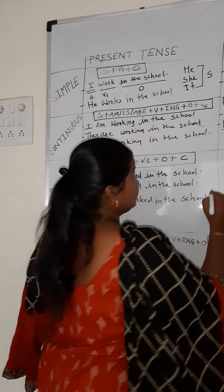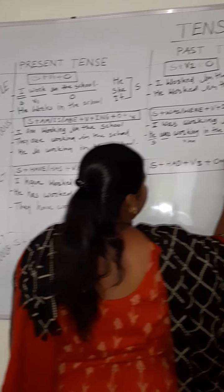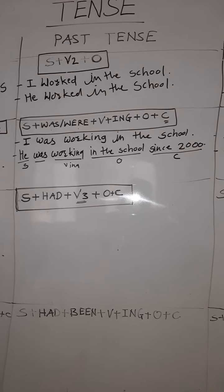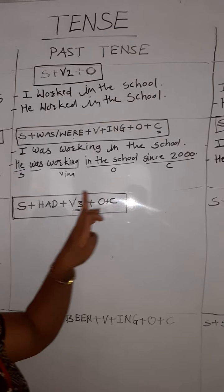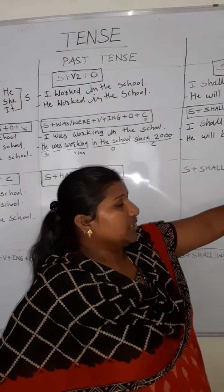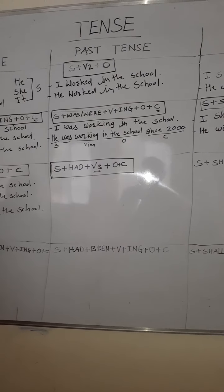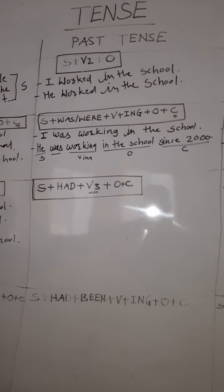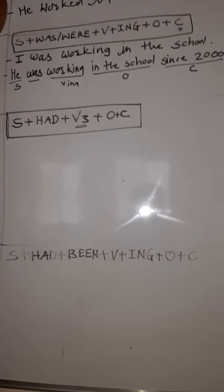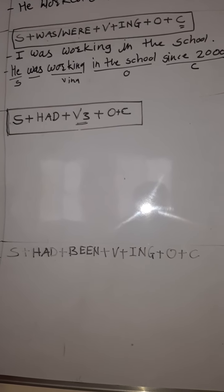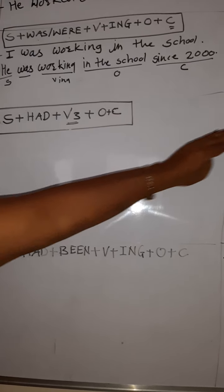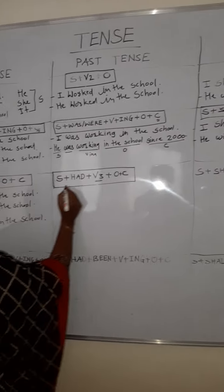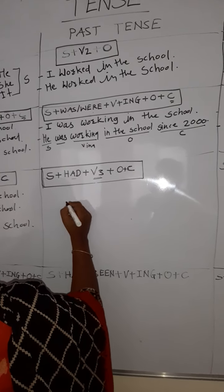Now let's see the perfect past tense. 'Perfect' means V3 should be there. But perfection is present in present, past, and future tense. So how do we know which perfect tense it is? 'Have' or 'has' means present tense. 'Had' means past tense. V3 means perfect. 'Shall' or 'will' means future, and V3 means perfect. So 'had' means past and V3 means perfect — together: perfect past tense.